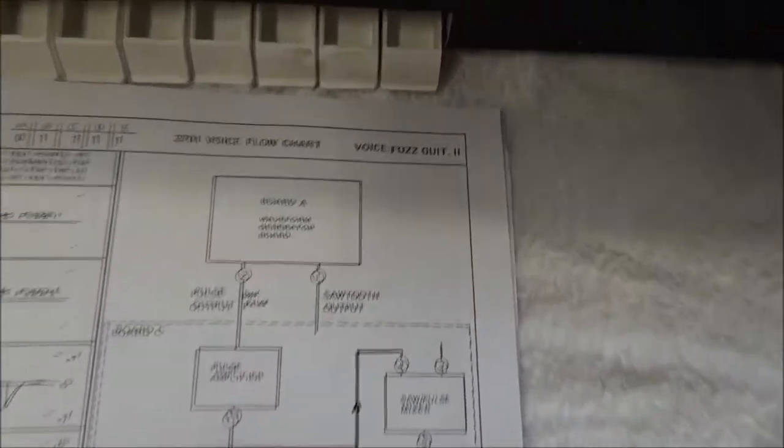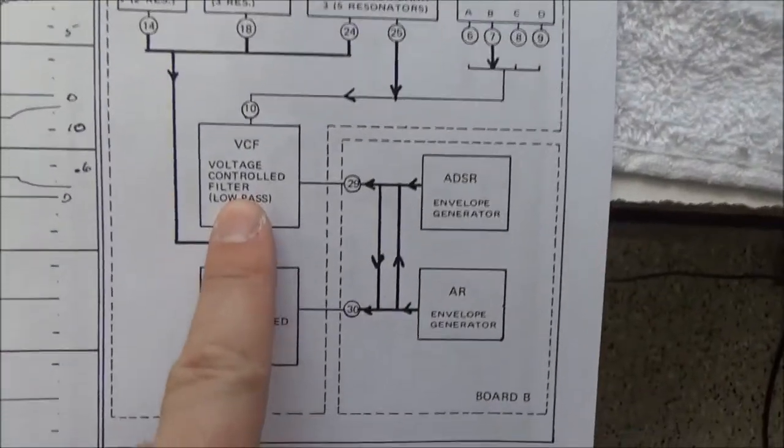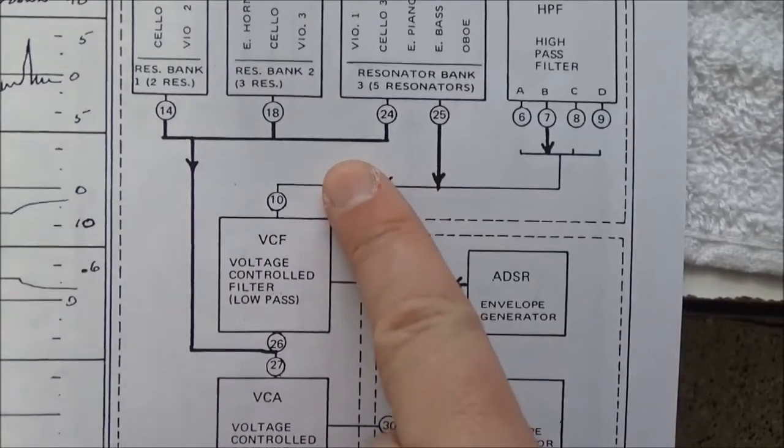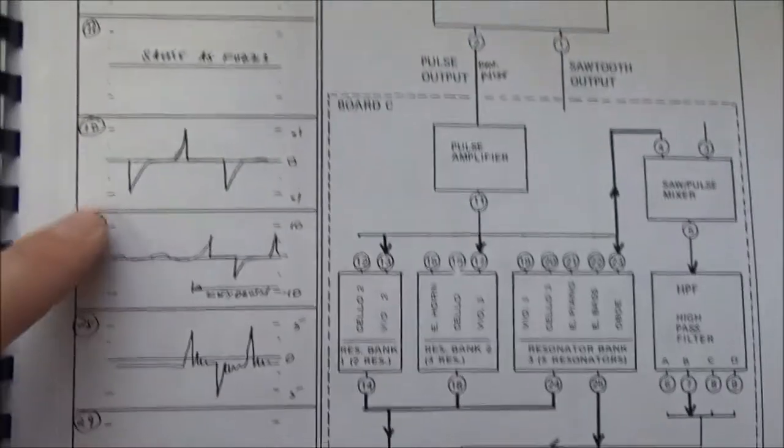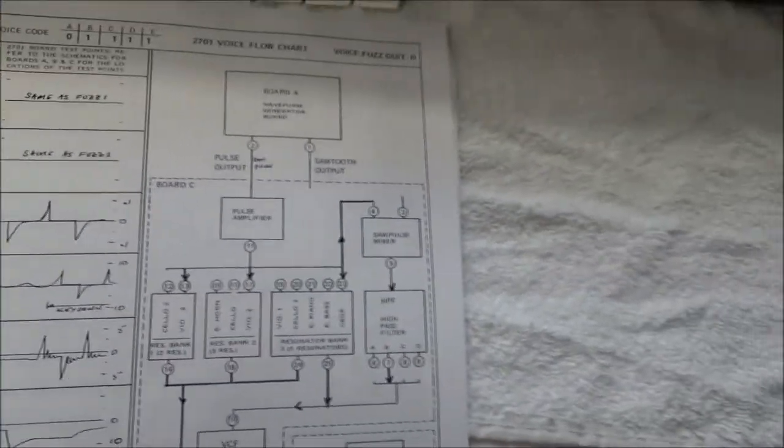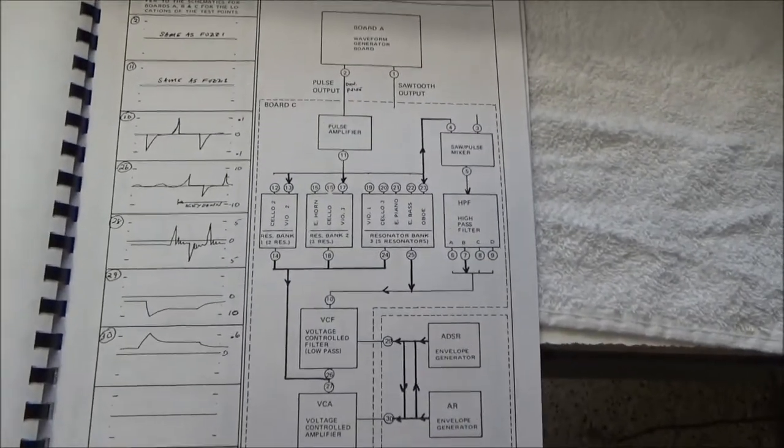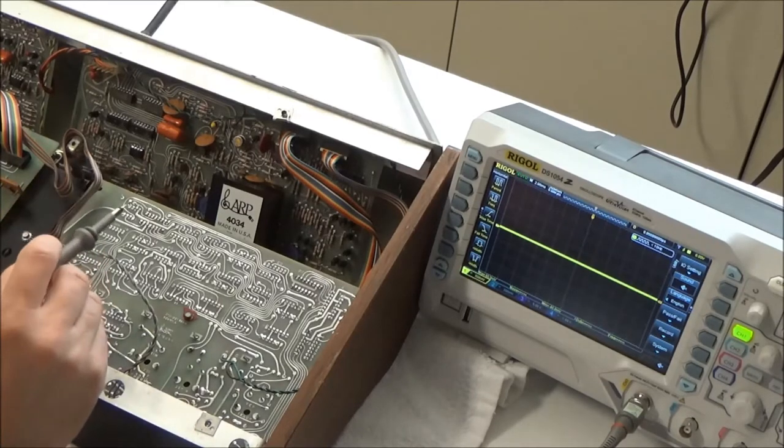Right now we're going to be looking at Fuzz Guitar 2. A good place to start would be the voltage control filter. 0.10 is right before the VCF and 0.26 is right after the VCF. It shows the sample waveforms there. We can also compare to Fuzz Guitar 1, which appears to be working, which has a very similar sound. We're going to first look at Fuzz Guitar 1's VCF output.